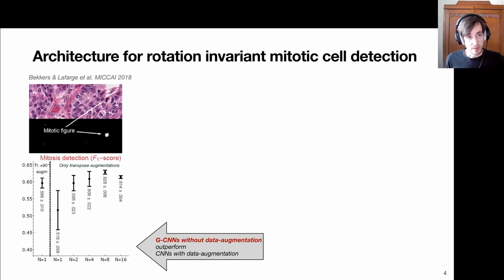We did quite some experiments with this. For example, on this mitotic figure detection problem, we computed these F1 scores. We compared to a conventional 2D CNN trained with data augmentation - that's this result here. Then we trained the group convolutions without rotation data augmentation.